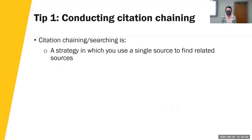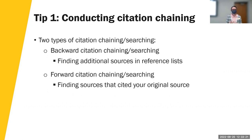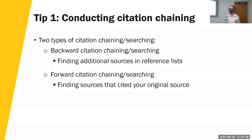So our first tip is to conduct citation chaining. This is a strategy where you can use a single source to find related sources. It helps you trace the root of important ideas within your research topic, as well as discover how a topic has changed over time. There are two types: backward citation chaining — looking at the reference lists of the sources you're reading to find other related sources — and forward citation chaining, where you start with an original source and jump forward to see how it's been cited and covered in the research literature.